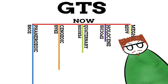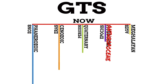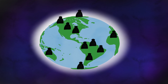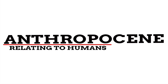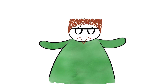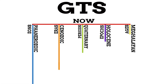Or are we? Recently, some experts have been claiming that we are no longer in the Holocene Epoch and that we've entered the Anthropocene Epoch. This is due to the huge impact that humans have had on this planet — hence why the name contains 'Anthropo,' meaning relating to humans. However, the term hasn't been accepted by any official body, so for now we are still in the Holocene Epoch.